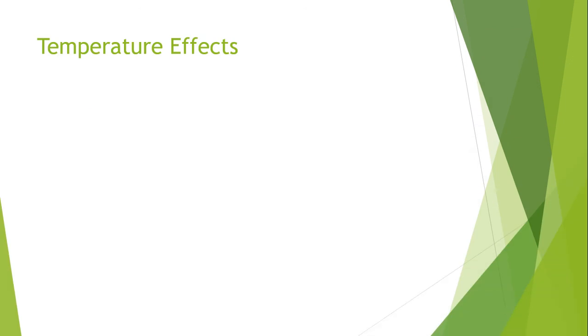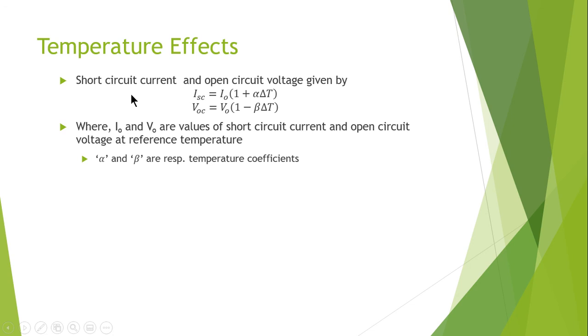Now I will discuss the temperature effects. Alpha and beta are the respective temperature constants that are associated with the current and the voltage. The short circuit current and the open circuit voltage is given by these formulas, where I naught and V naught are the values of the short circuit current and open circuit voltage at a reference temperature.